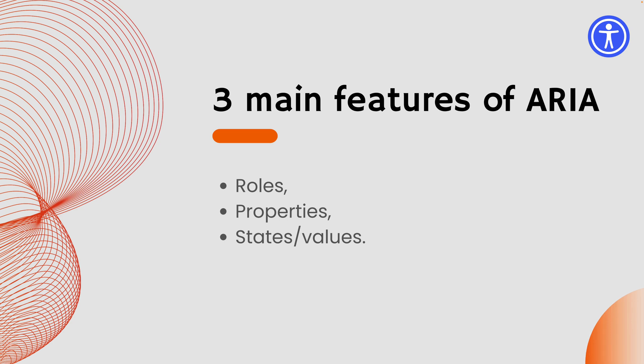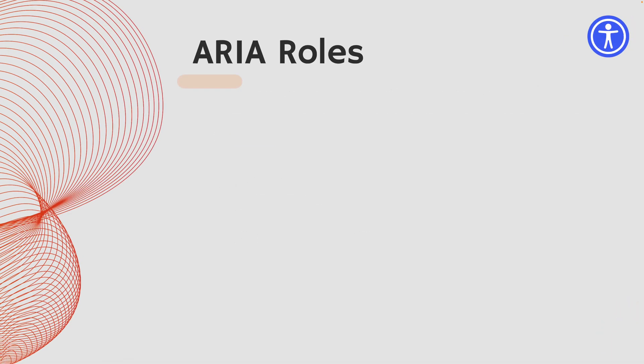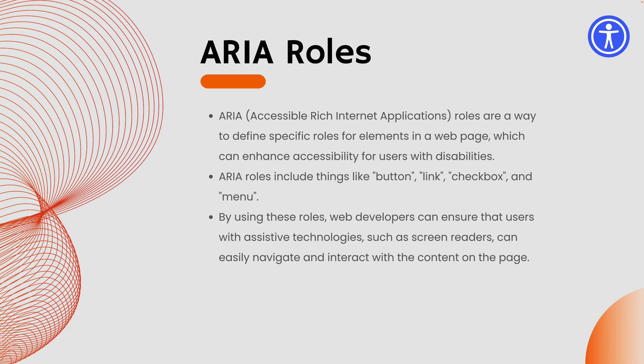There are three main features of ARIA: roles, properties, and states or values. ARIA roles define specific roles of an element in a web application to enhance accessibility for users with disabilities. ARIA roles include things like button, link, checkbox, and menus. By using these roles, web applications can ensure that users with assistive technology such as screen readers can easily navigate and interact with the content on the page.